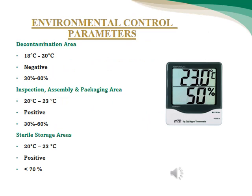Environmental control parameters: the decontamination area should be 18–20°C with negative air pressure and humidity 30–60%. The inspection, assembly, and packaging (IAP) area should be 20–23°C with positive air pressure and humidity 30–60%. The sterile storage area should be 20–23°C with positive air pressure and humidity less than 70%.